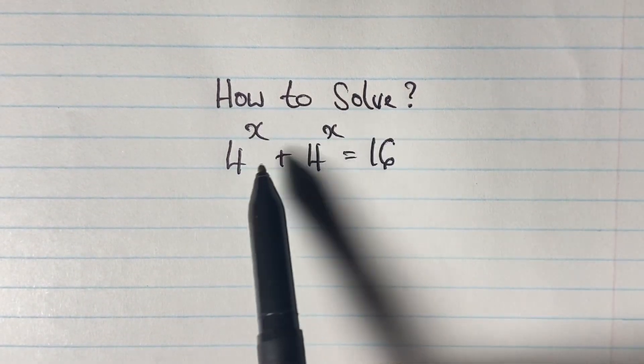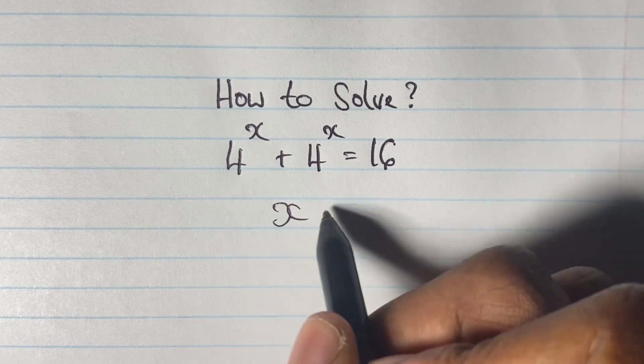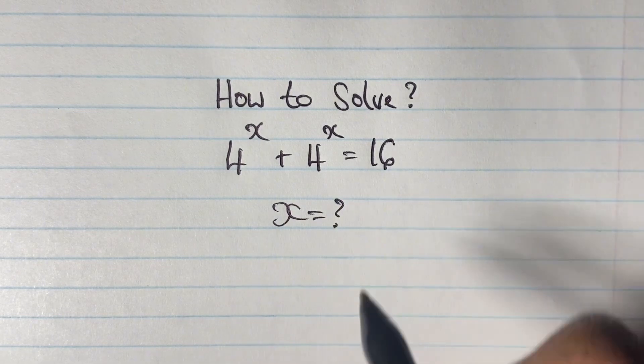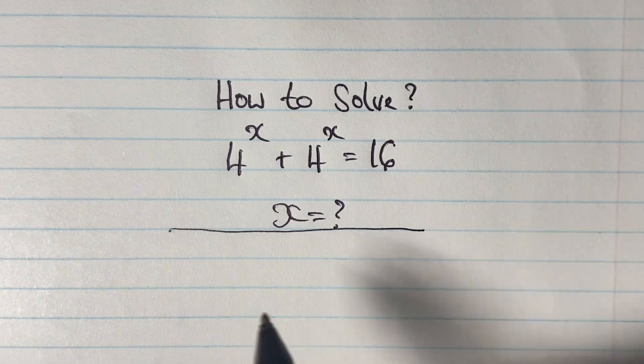Greetings again everyone, welcome back to my channel. Here we're going to solve this equation where we have 4 to the power of x plus 4 to the power of x is equal to 16. So here we are going to find the value of x.